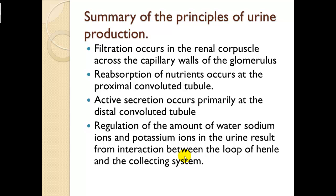Summary of urine production principles: filtration occurs in the renal corpuscle across the capillary walls of the glomerulus — in Bowman's capsule — where filtrate begins and urine formation starts. Reabsorption of nutrients occurs at the proximal convoluted tubule. Active secretion occurs primarily at the distal convoluted tubule. Regulation of water, sodium, and potassium in the urine results from the interaction between the loop of Henle and the collection system. The descending branch is permeable to water; the ascending branch is not.